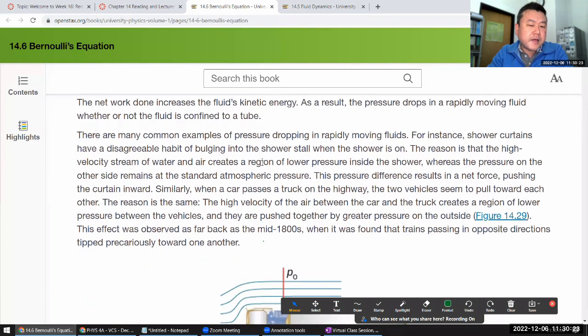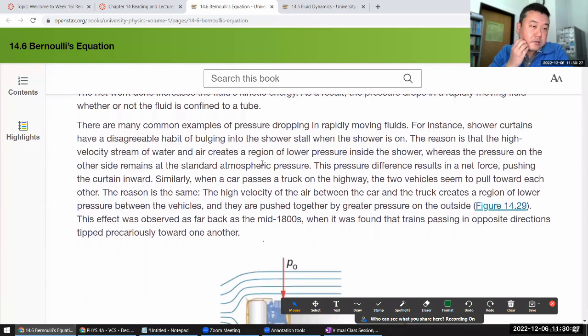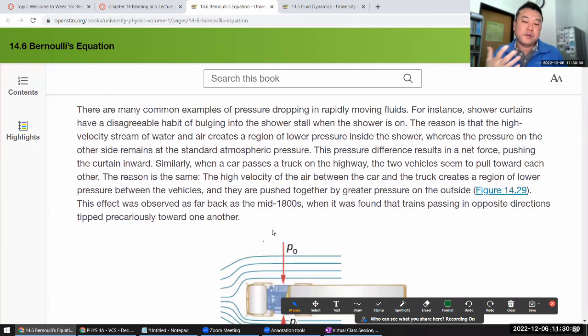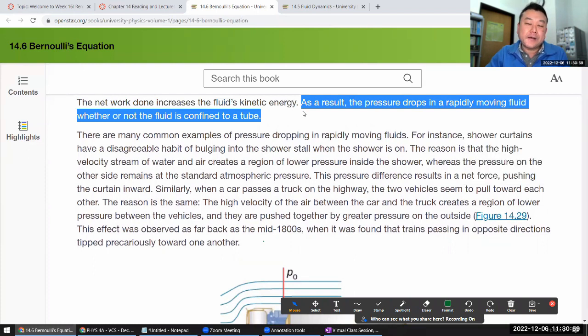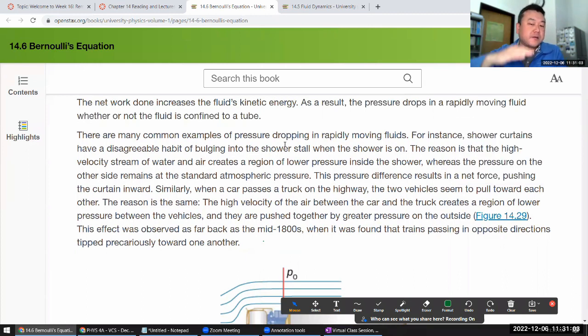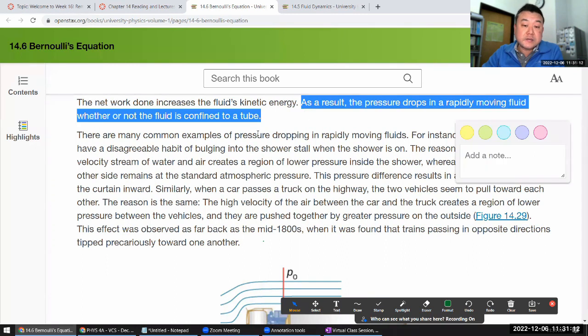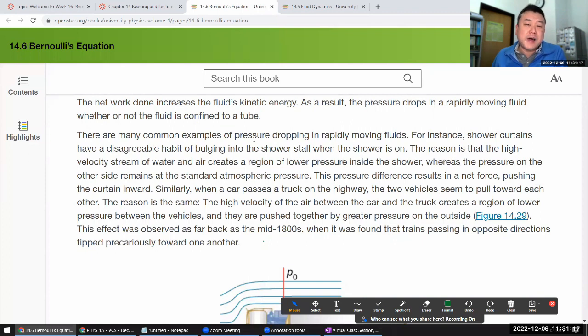Pressure difference occurs when the channel narrows. This pressure difference, this is I think basically a statement of experimental fact. And hopefully it was some derivation that justifies theoretically why this should happen. This pressure difference results in the net force on the fluid because the pressure times the area equals the force. And this net force does work. I think that makes sense conceptually. Recall the work energy theorem. What I was saying earlier. Difference in the kinetic energy comes from the network done. The network done increases the fluid's kinetic energy. As a result, the pressure drops in a rapidly moving fluid, whether or not the fluid is confined to a tube. That's interesting.